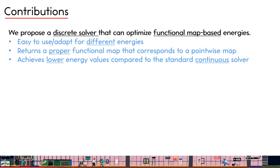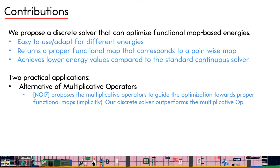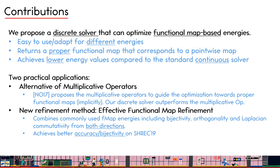In summary, we propose a simple discrete solver that can optimize different functional map-based energies. It returns a proper functional map corresponding to a high-quality point-based map, and achieves lower energy values compared to the standard continuous solver. Our discrete solver also has two practical applications. The first is to replace the multiplicative operator proposed in 2017. The second is a new refinement method that applies our discrete solver to minimize a combined energy including bijectivity, orthogonality, and Laplacian commutativity from both directions.